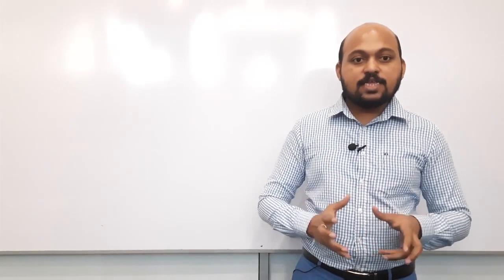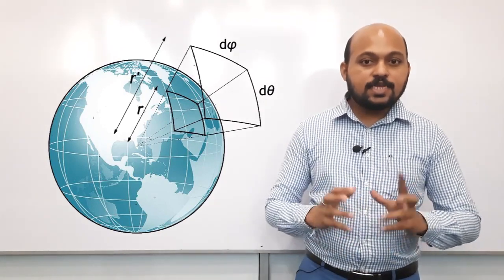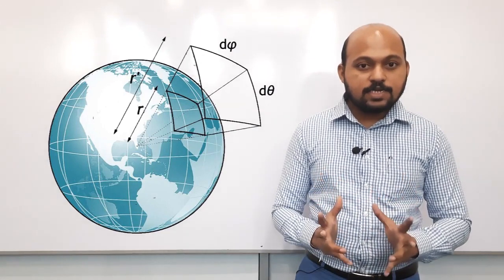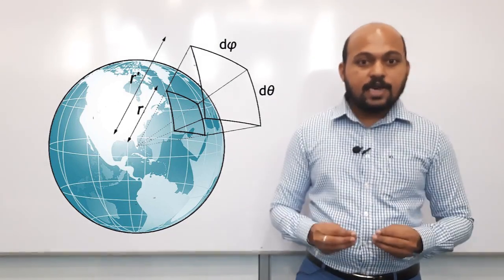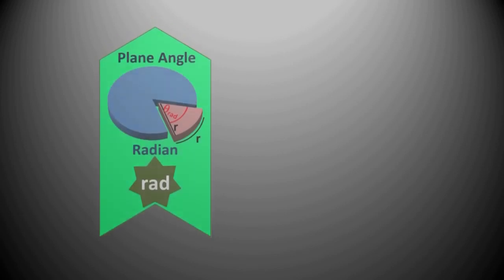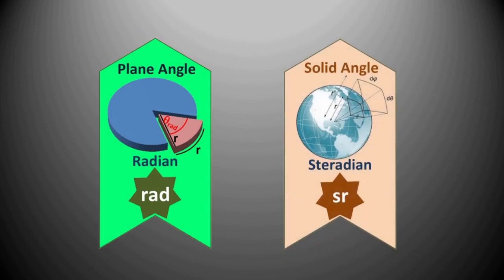The solid angle and the unit of steradian is not in use in the A-levels, so it is enough to know the interpretation only. In a sphere with any radius, the angle subtended at the center of the sphere by a segment of spherical surface with the surface area equal to the square of the radius of the sphere is defined as one steradian. To recap: the first supplementary unit is plane angle, unit radian, symbol RAD; the second supplementary unit is solid angle, unit steradian, symbol SR.